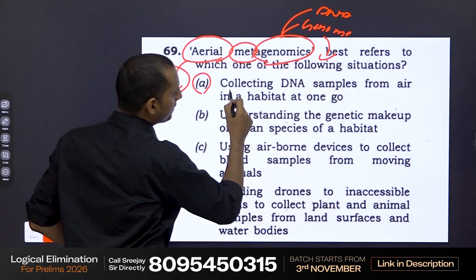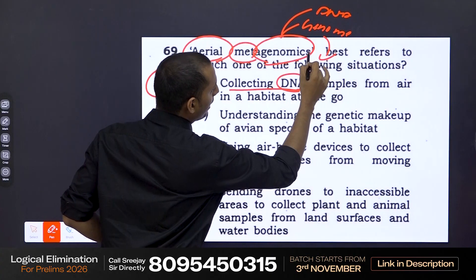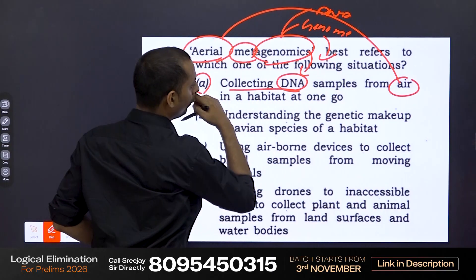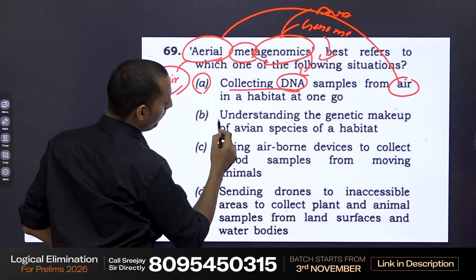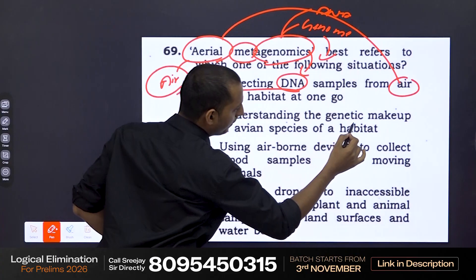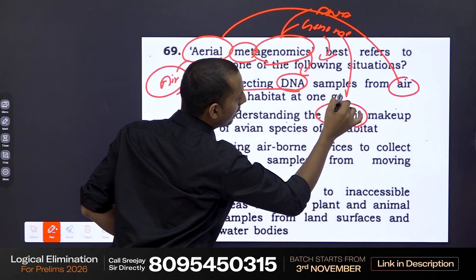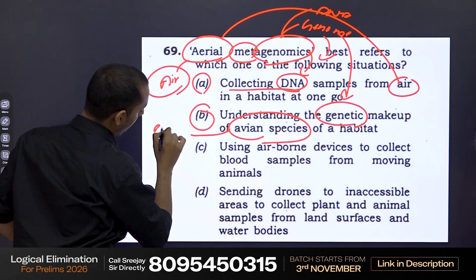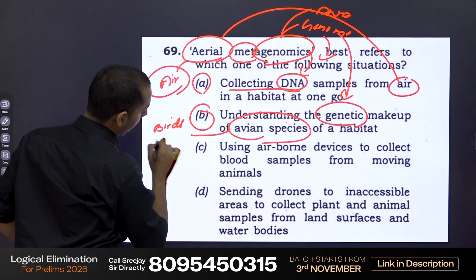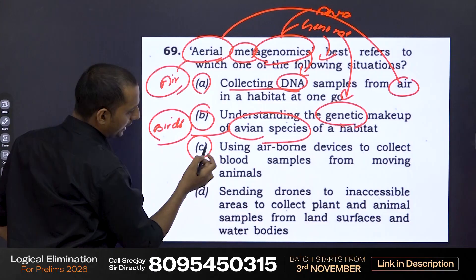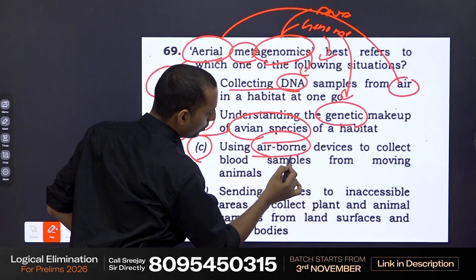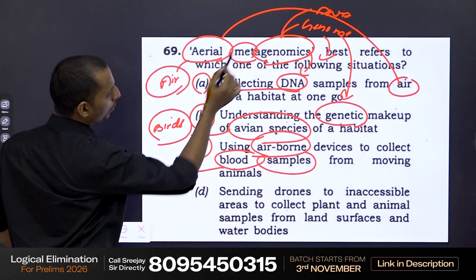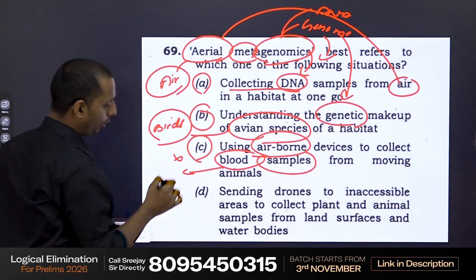Option A deals with collecting DNA samples, which has direct relation to genome and from the air — so it satisfies both aerial and genome. Option B deals with understanding the genetic makeup, so genetic/genome is directly there and it talks about avian species, which relates to birds. Now option C uses airborne devices to collect blood samples. Blood is not directly related to genome. Therefore, you can eliminate option C.